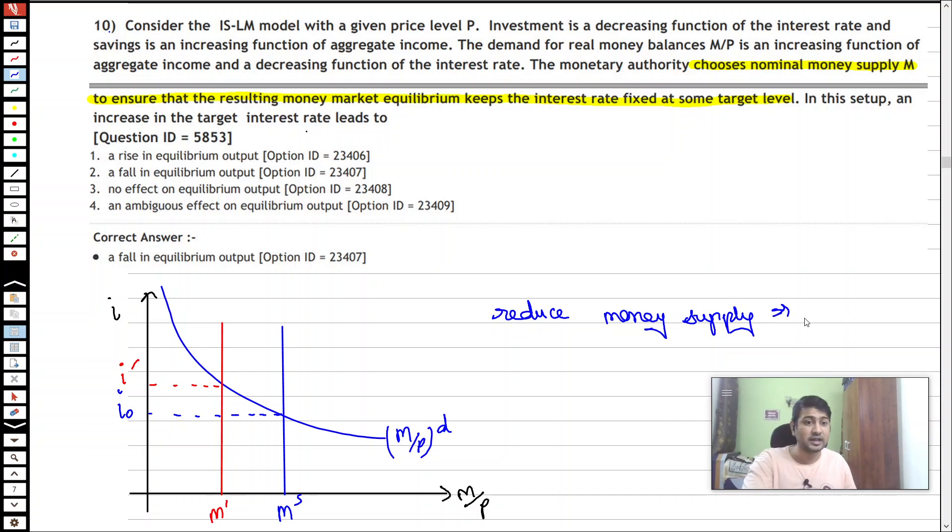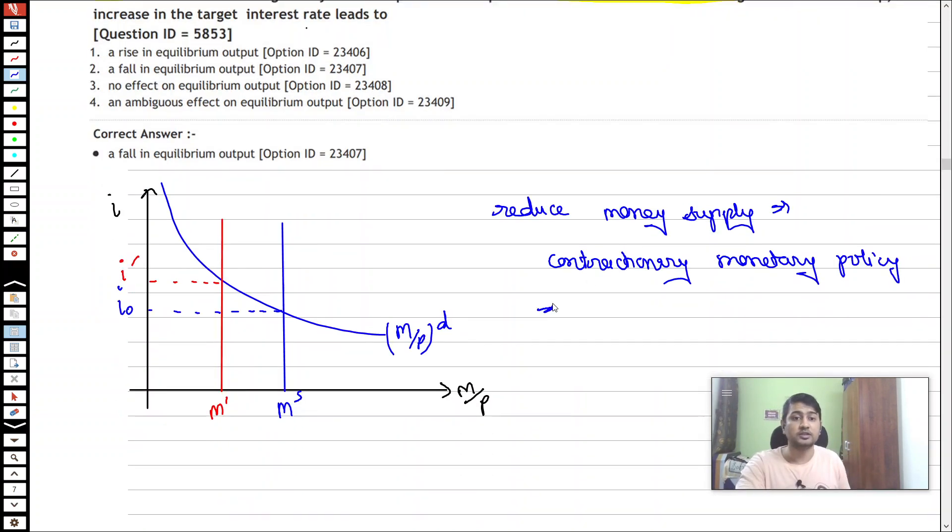Which we know from the standard IS-LM model is basically a contractionary monetary policy. And what it is going to do is reduce my equilibrium output Y star.